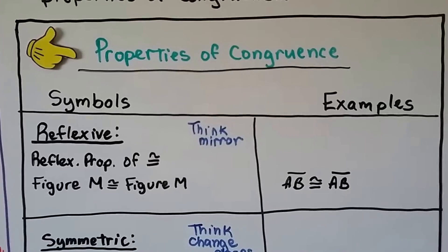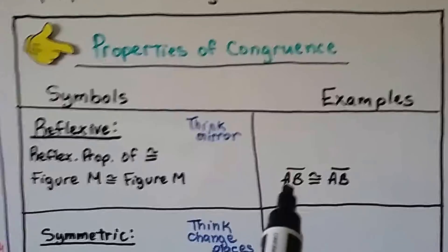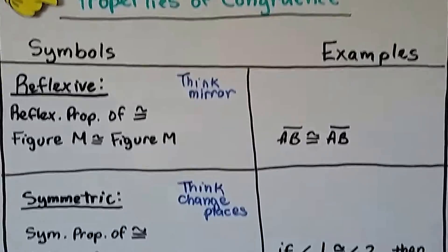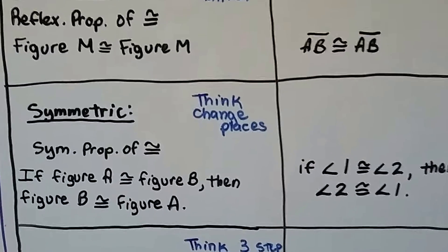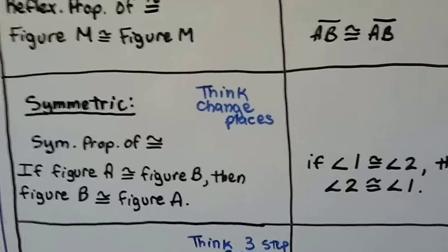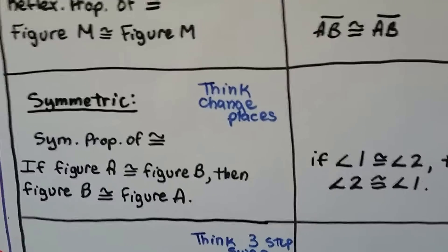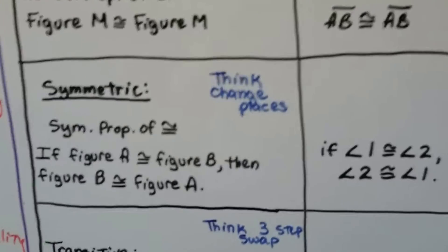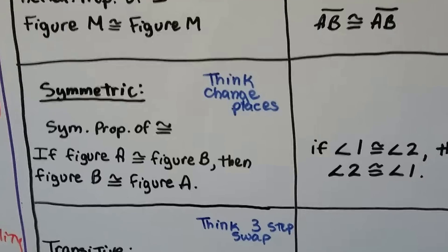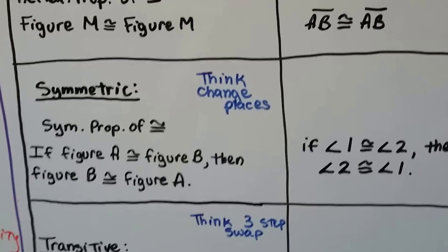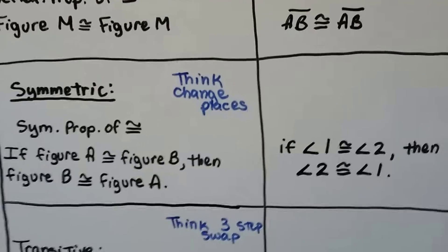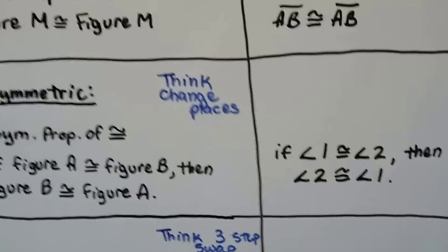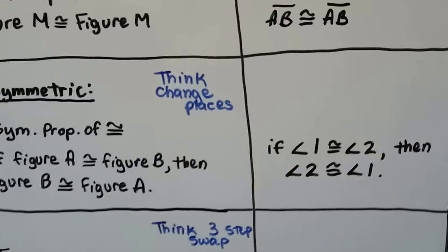The symmetric property of congruence — think changing places — is written as: if figure A is congruent to figure B, then figure B is congruent to figure A. For angles: if angle 1 is congruent to angle 2, then angle 2 is congruent to angle 1.